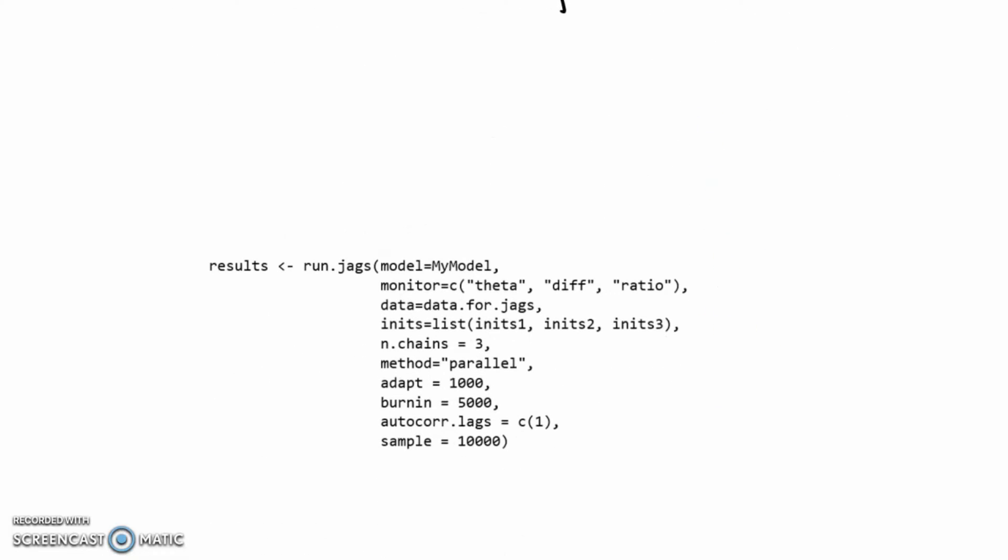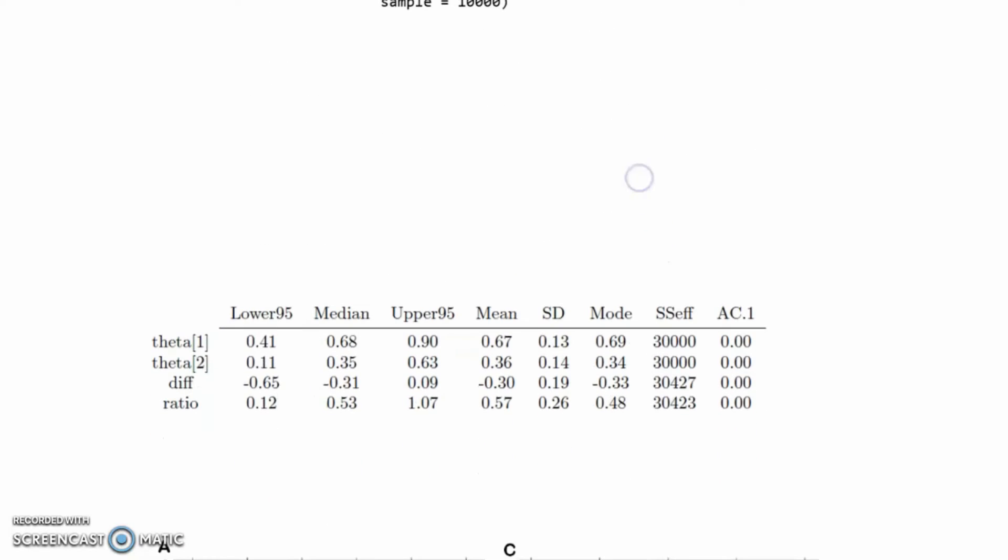Here's how we generate our results. Diff and ratio is pretty straightforward. Theta, we're going to monitor theta. We've got theta 1 and theta 2, but in a sense, all we've really got is theta indexed by either 1 or 2. So we can just specify theta. Specify our data, list of initial values, number of chains. I've changed the autocorrelation to 1. We come down here and we see the results. Typically what we're most concerned with are things like the median, the mean, and the mode. They're all pretty much the same. And the 95% credible intervals—this is Bayesian, credible intervals on the mean.